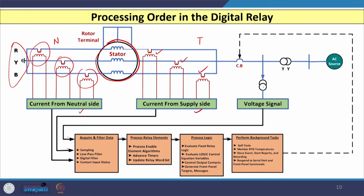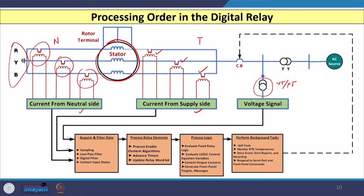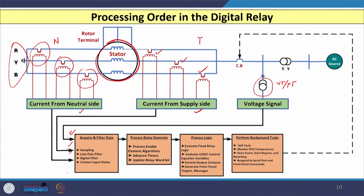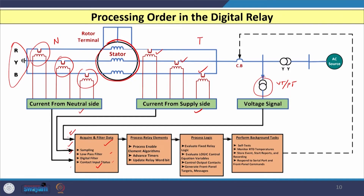Additional digital inputs — such as status of breakers and other devices — can also be provided. Once CT and PT inputs are given to the digital relay, the first processing step involves removing harmonics and noise using a low-pass filter or anti-aliasing filter. Digital filters are also used. Along with filtering, sampling is performed to convert analog signals into digital signals.